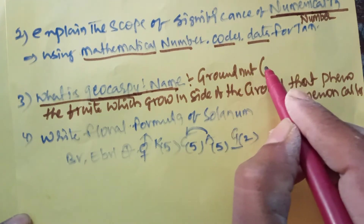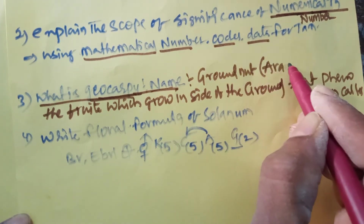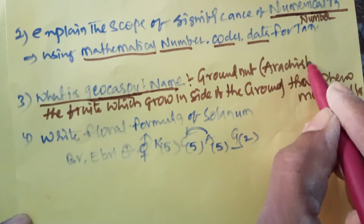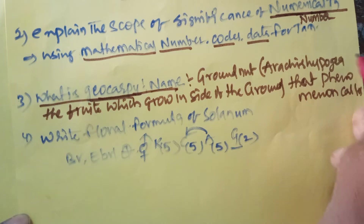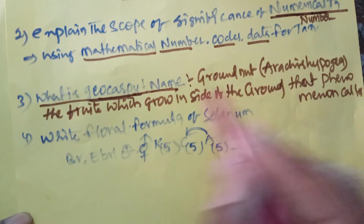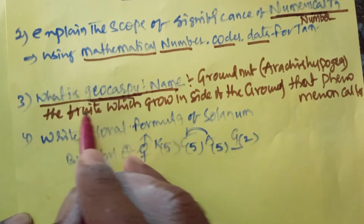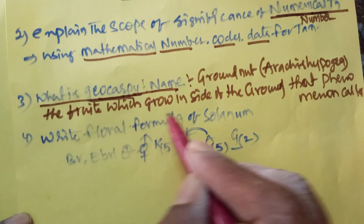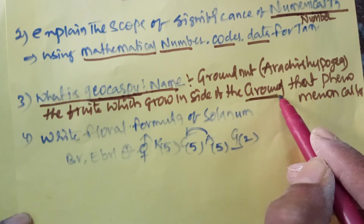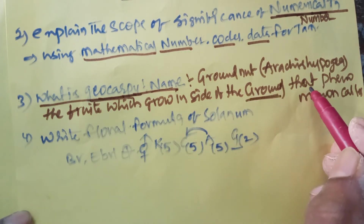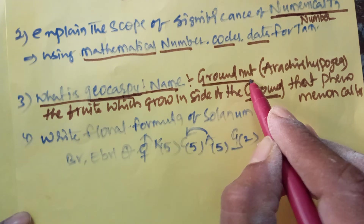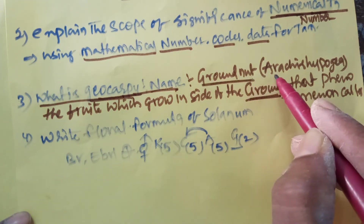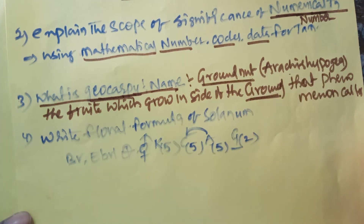The scientific name of groundnut is Arachis hypogea. So geocarpy means the fruit which grows inside the ground or inside the soil, and the best example is groundnut, Arachis hypogea.